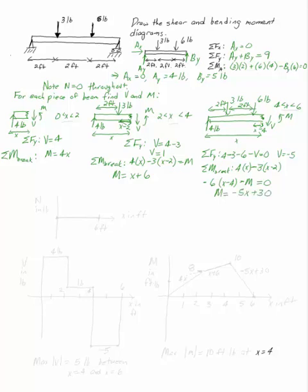Now I want to graph them. If I graph the N diagram, life is very simple. From 0 to 6 feet, N is equal to 0. So that takes care of that one. If I graph the V diagram, I've got V in units of pounds, X in units of feet. And if I mark off some distances here, that's my 6 feet of my beam.